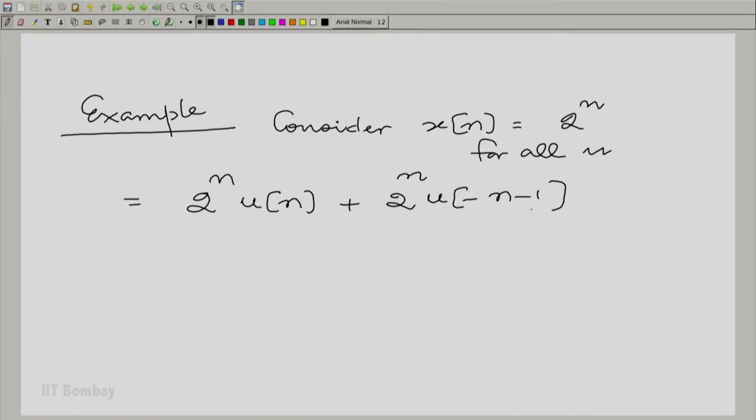So, essentially what we are saying is, separate out the points n from minus infinity towards minus 1. So, take all this together and put it here, and then take n equal to 0 onwards and put it here.